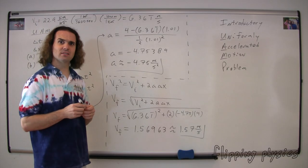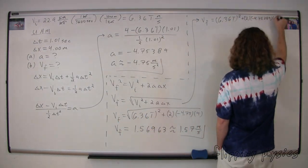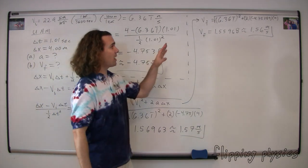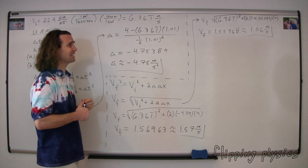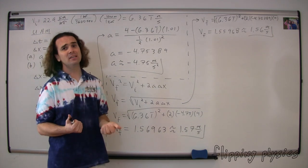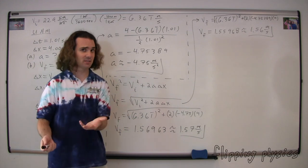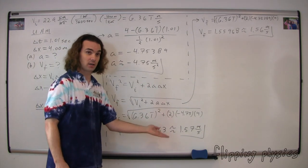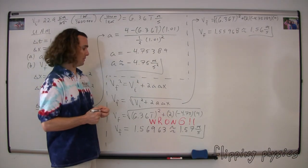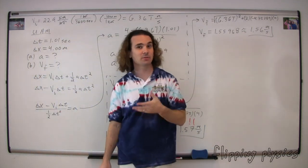Let's take a look at what happens when we use the correct, unrounded numbers. Notice that when we use the unrounded answer for Part A in Part B, we end up with final velocity equal to 1.55968, which rounds to 1.56 meters per second — clearly not 1.57 meters per second. Please always use the unrounded answer when working through a problem. In physics, you're either right or you're wrong. And speaking of being precise, I want to remind everybody that what we found here was the final speed, not the final velocity, because we don't have a direction.